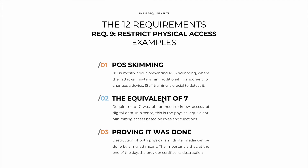Staff training is crucial to detect these devices. This requirement is in many ways the equivalent of requirement 7 — requirement 7 was about need-to-know access of digital data, while this is the physical equivalent. We are minimizing access based on rules and functions, but access to physical locations rather than data.